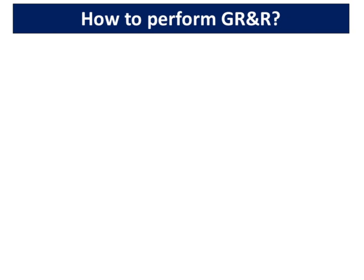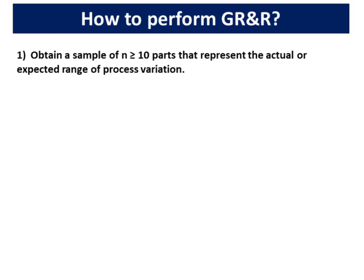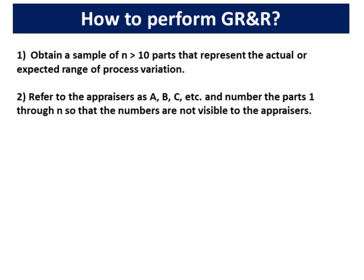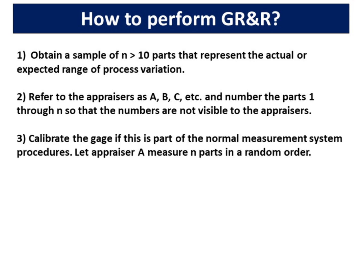How to perform GR and R. Step 1: Obtain a sample of N greater than or equal to 10 parts that represent the actual or expected range of process variation. Step 2: Refer to the appraisers as A, B, C, etc., and number the parts 1 through N so that the numbers are not visible to the appraisers.